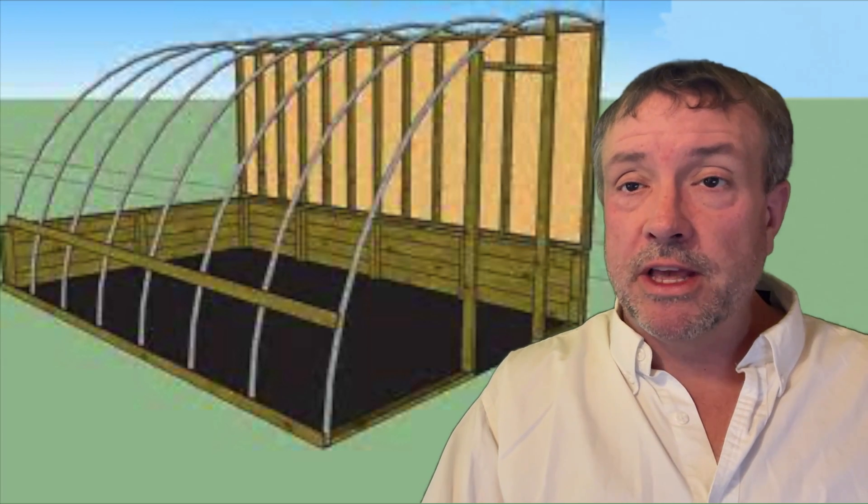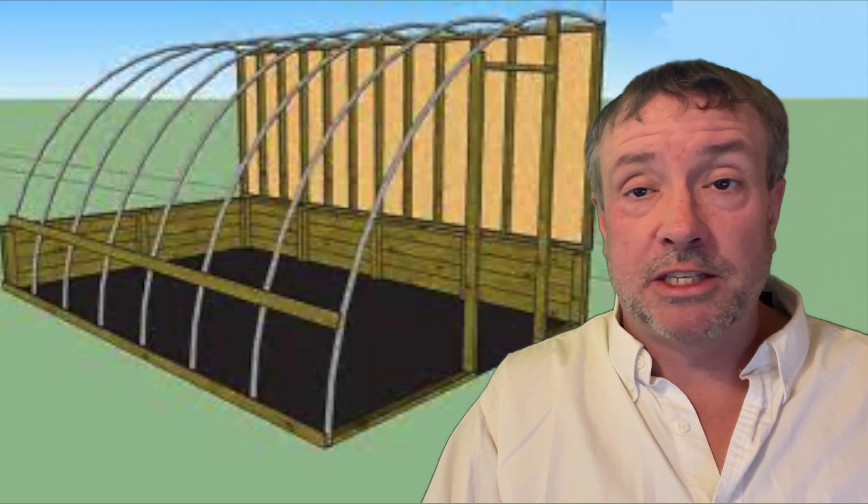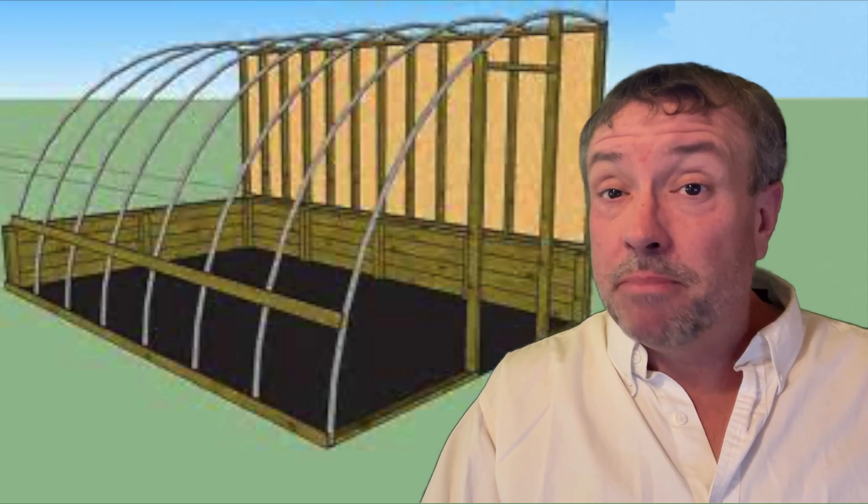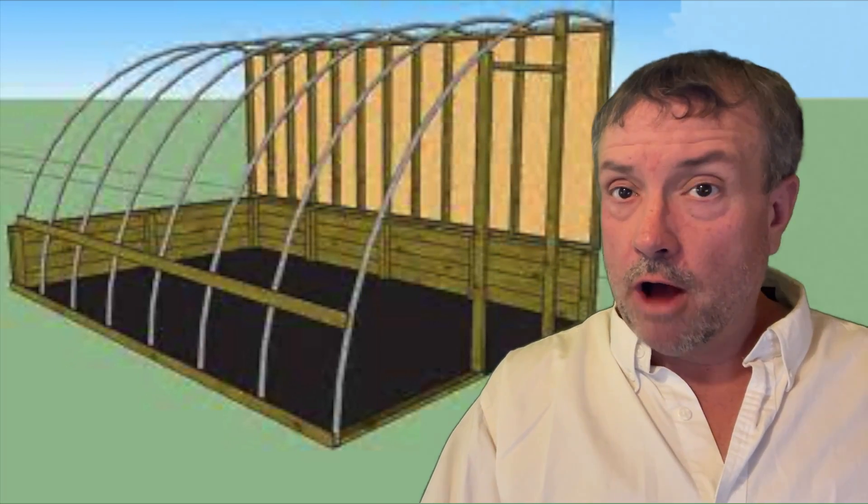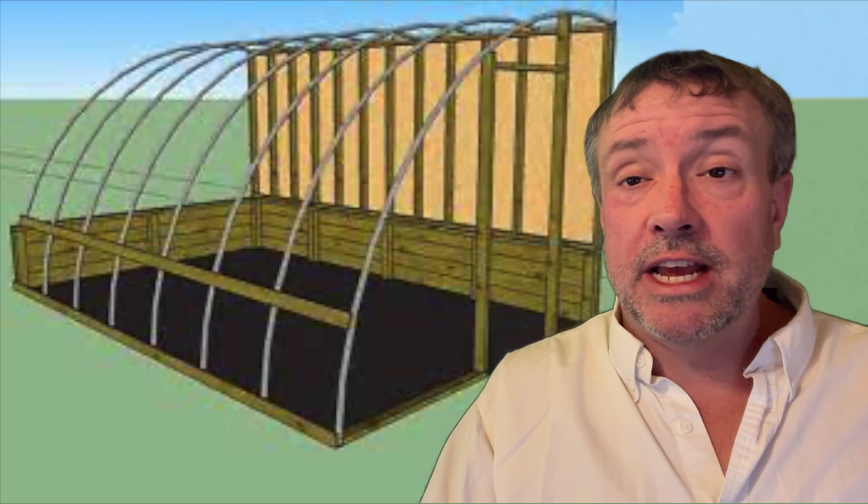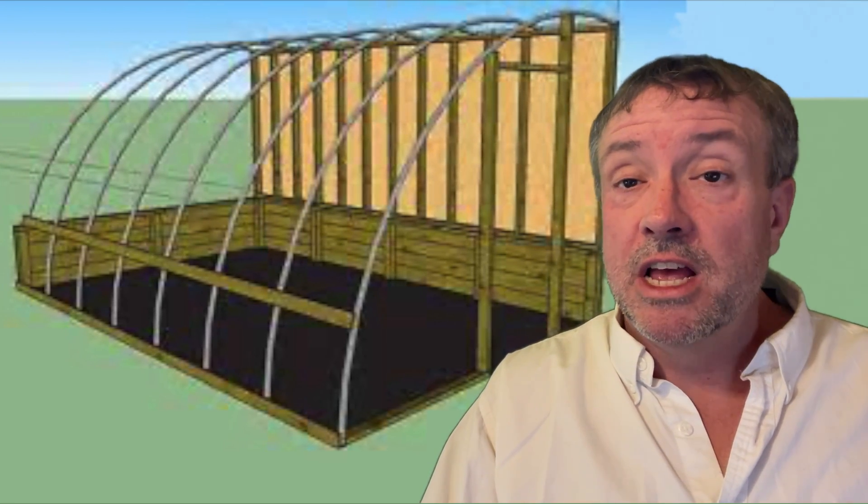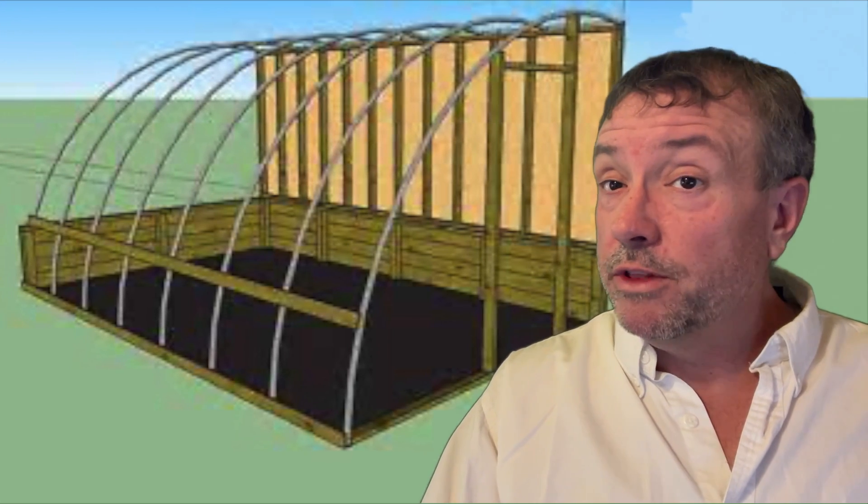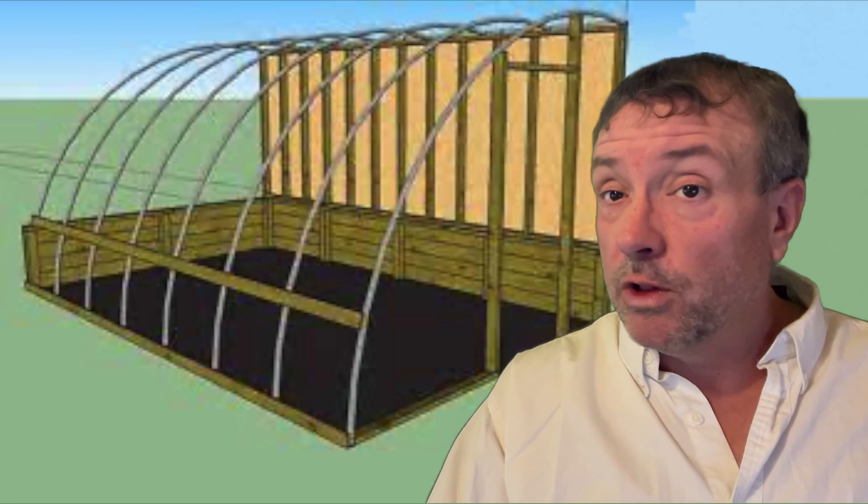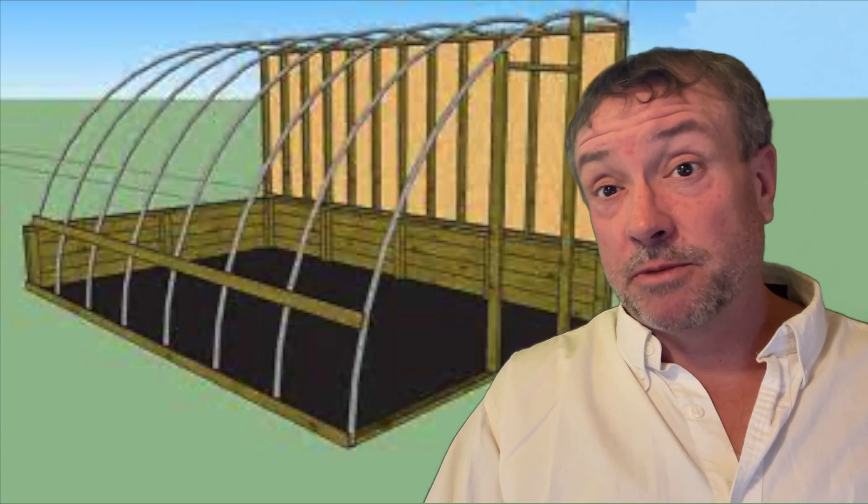Third, most people think a greenhouse needs to be all transparent material on all walls, but in northern climates the sun rises in the southern sky, often quite low, and if you orientate a long greenhouse east to west, the north wall will never get direct sunlight. If a wall will never get sunlight, it's much smarter and cheaper to fully insulate that wall rather than have it transparent.